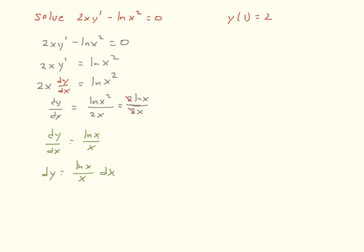To start out with, we want to solve the differential equation 2x·y′ minus the natural log of x squared equals 0, subject to the initial condition that y(1) equals 2 — in other words, when x is 1, y is going to be 2.